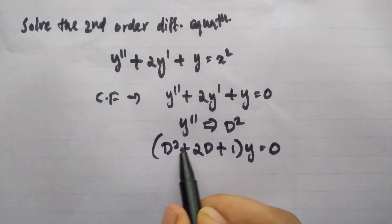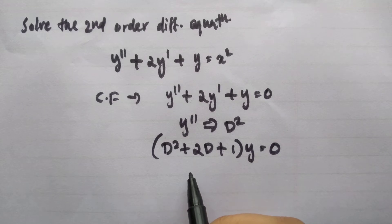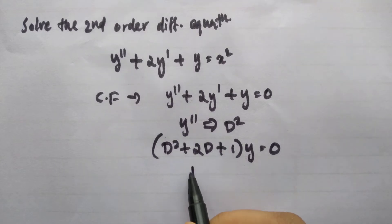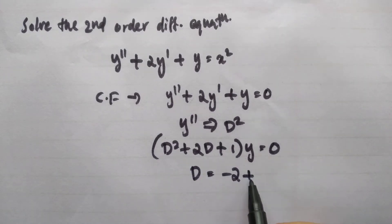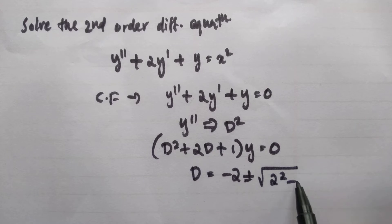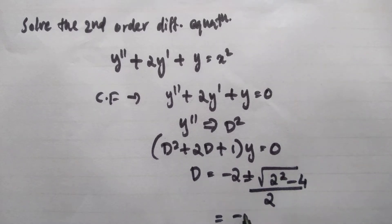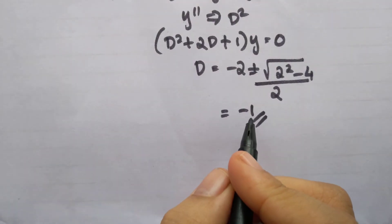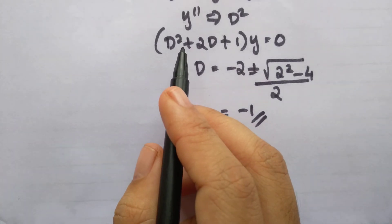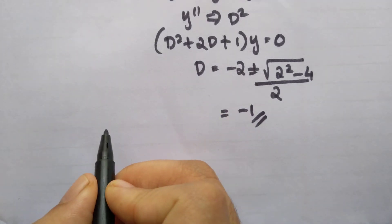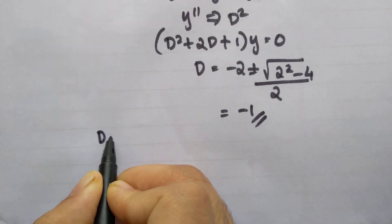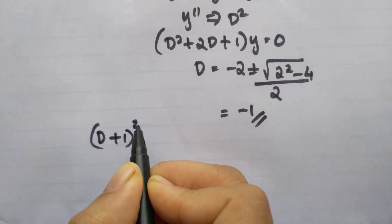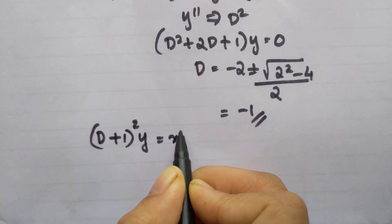Now we find the roots of this equation using the formula: minus b plus or minus root of b square minus 4ac divided by 2a. So D equals minus b plus or minus root of b square minus 4ac divided by 2a. This gives minus 1, so both roots of this equation are minus 1. We write this in factorized form as D plus 1 all square multiplied by y equals x square.